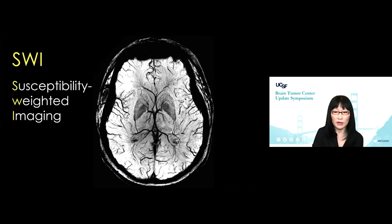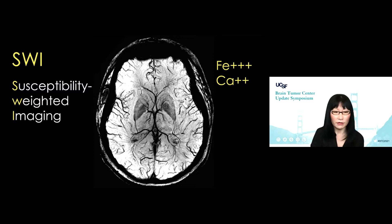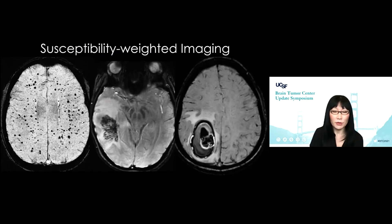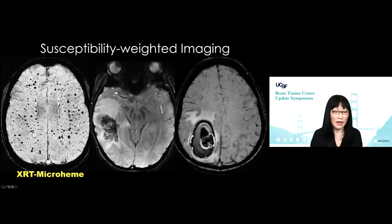Let's start with susceptibility weighted imaging. We now have unprecedented detail of the venous anatomy that we can see with this technique, which only takes about five minutes of imaging time. For brain tumor patients, we acquire this sequence to look for whether we're seeing calcium or iron. There are three patterns we run into: the vast majority of patients, particularly those who've had radiation therapy, will develop multitudes of small micro hemorrhages — the telltale sign that our radiation oncologists have radiated that brain.